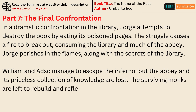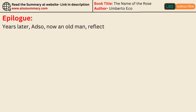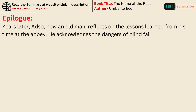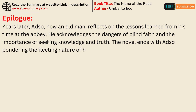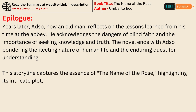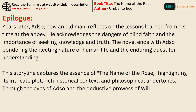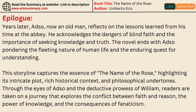The surviving monks are left to rebuild and reflect on the events that transpired. Years later, Adso — now an old man — reflects on the lessons learned from his time at the abbey. He acknowledges the dangers of blind faith and the importance of seeking knowledge and truth. The novel ends with Adso pondering the fleeting nature of human life and the enduring quest for understanding. This storyline captures the essence of The Name of the Rose, highlighting its intricate plot, rich historical context, and philosophical undertones. Through the eyes of Adso and the deductive prowess of William, readers are taken on a journey exploring the conflict between faith and reason, the power of knowledge, and the consequences of fanaticism.